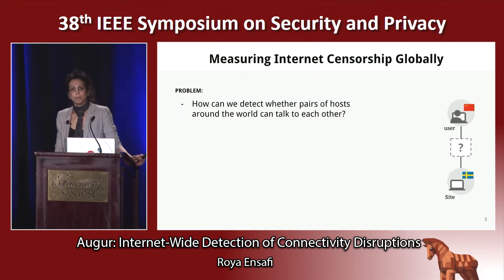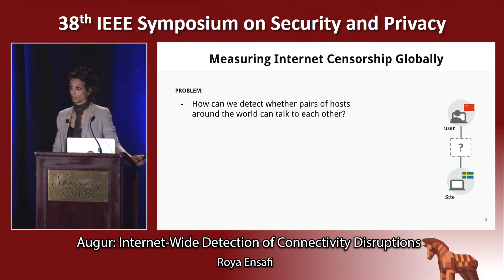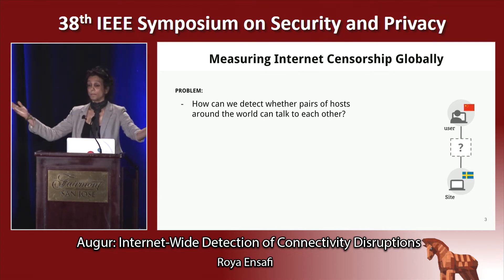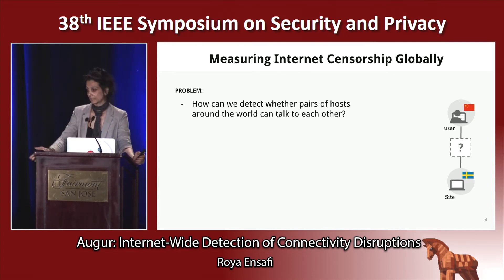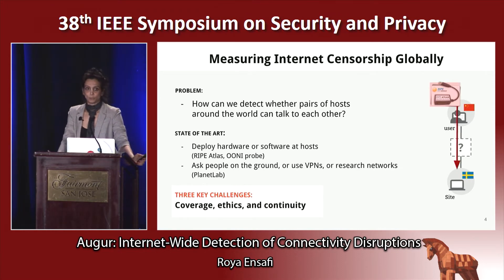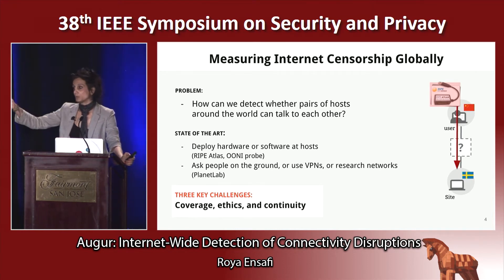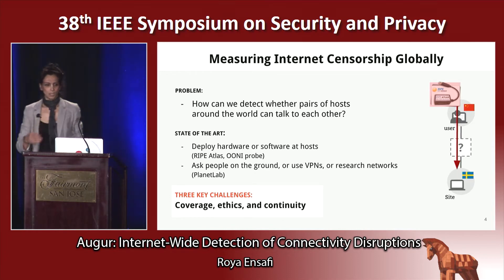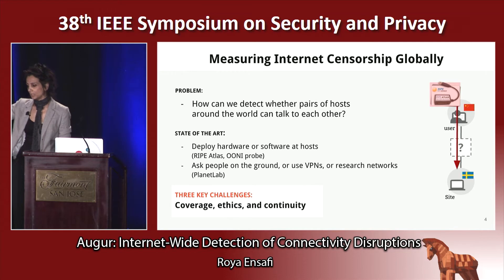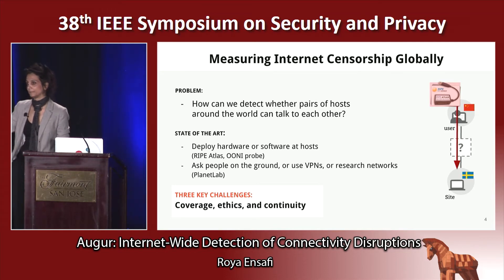We can state this problem formally as: how can we detect whether two pairs of hosts can talk to each other? And we want to know that for many hosts around the world and many sites — say a Chinese user to a site in Sweden. Current approaches involve putting instrumentation at a user's site by installing software, handing out Raspberry Pis, or simply renting VPNs.